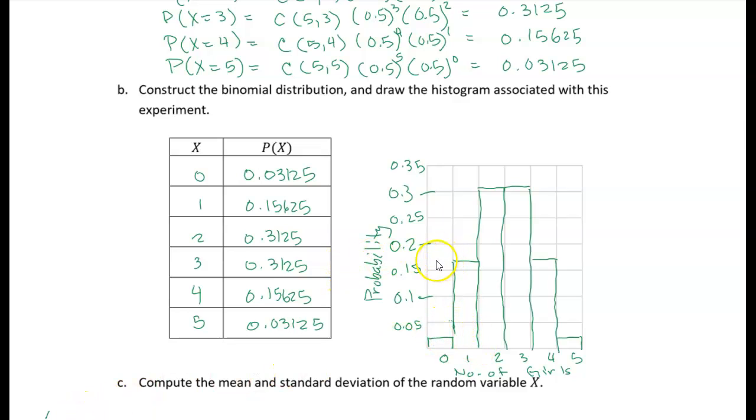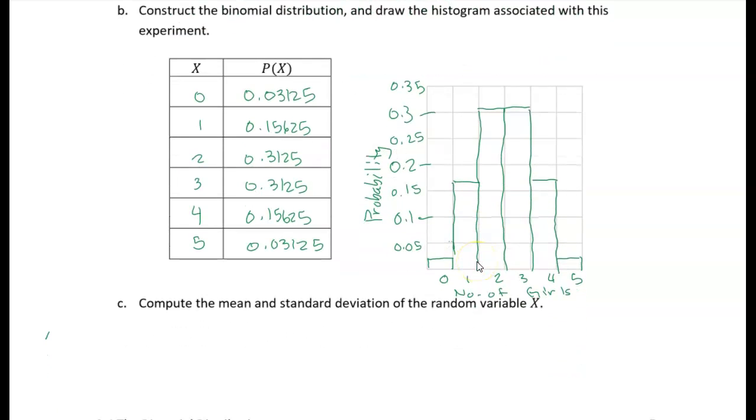All right, so there's my probability distribution, both as a table and a histogram. And the last question is just asking us to compute the mean and the standard deviation.